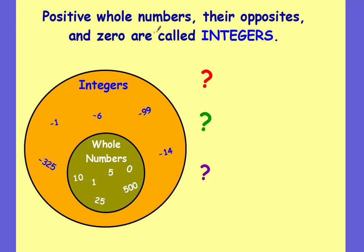Positive whole numbers, their opposites, and zero are called integers. In elementary school, you worked a lot with the natural numbers, also called counting numbers — those are the numbers one, two, three, four, five, and so on. Whole numbers include your counting numbers but also include zero. A lot of times when naming different number classifications, natural numbers is left off and they just begin with whole numbers, though sometimes you'll see natural numbers listed.